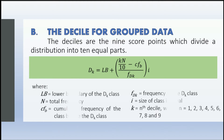In the decile formula: lb is the lower boundary of the Dk class, n is the total frequency, cf sub b is the cumulative frequency of the class before the Dk class, f sub Dk is the frequency of the Dk class, i is the size of the class interval, and k is the nth decile wherein it can be 1, 2, 3, 4, 5, 6, 7, 8, or 9.